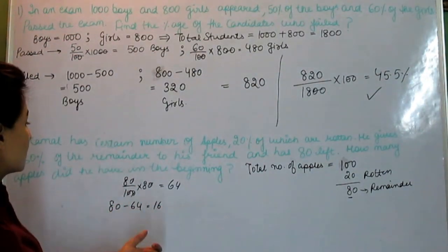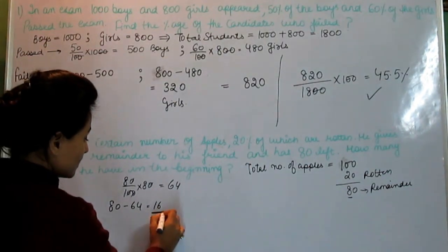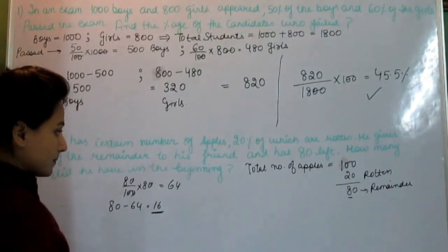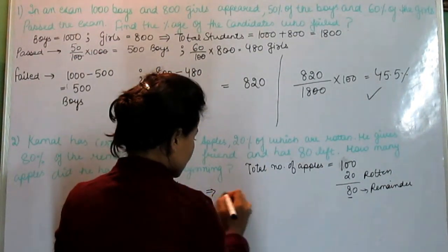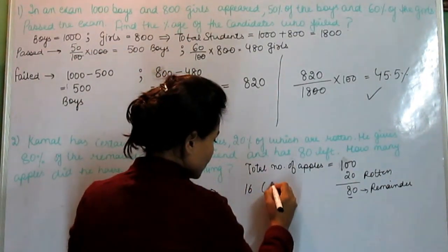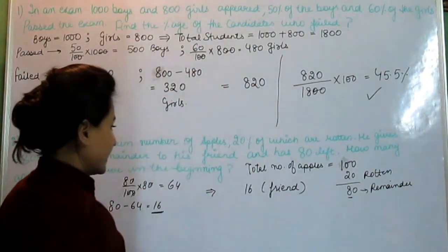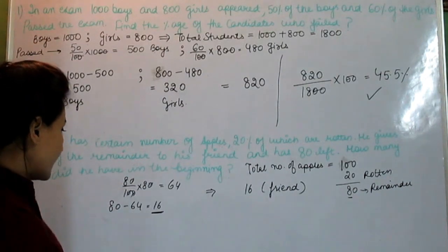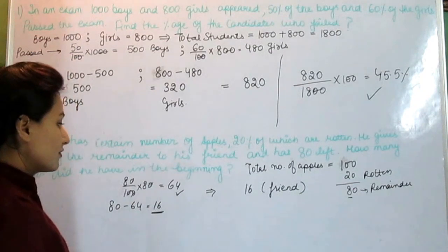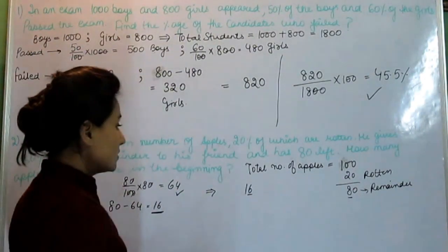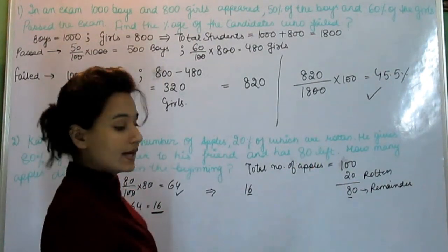80% of the remainder to his friend, he gives 64 to his friend. He has left with 16, but how much is given? He has left with 80. So 80 is 5 times of 16.